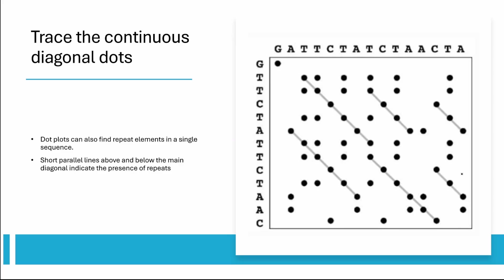Dot plots can also find repeat elements in a single sequence. Short parallel lines above and below the main diagonal indicate the presence of repeats.